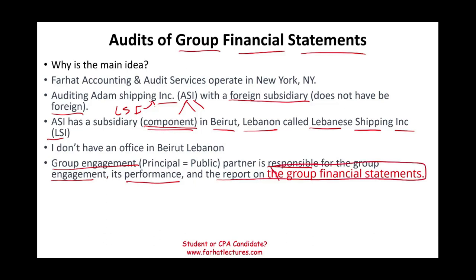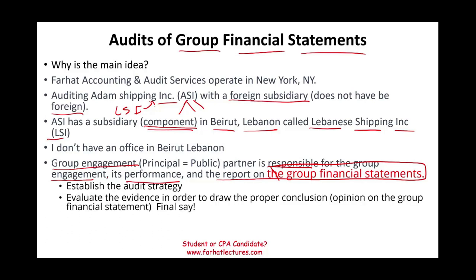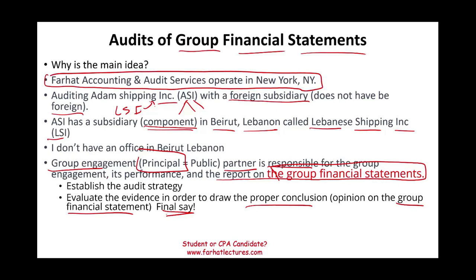What is the group financial statement? Think of it as the consolidated financial statements. When you audit a parent company and its subsidiaries, you are auditing everything — the group financial statement. I'm responsible for establishing the audit strategy, evaluating the evidence in order to draw a proper conclusion, because I have to issue an opinion on the group financial statement. I have the final say. For public companies, they call it the principal partner. Farhat Accounting and Audit Services is the group engagement partner.